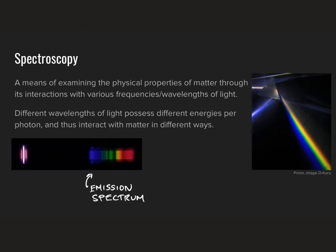Quick definition: spectroscopy is defined as a means of examining the physical properties of matter through its interactions with various frequencies and wavelengths of light. Because different wavelengths of light possess different energies, as described by Planck's equation, those different frequencies or wavelengths of light interact with matter in different ways based upon the different energies that they possess. We're going to start by talking about a couple of the different broad categories of spectroscopy which we use to probe matter.